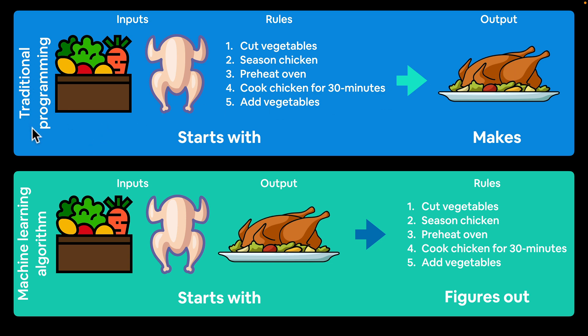Now, a machine learning algorithm typically takes some inputs and some desired outputs, and then figures out the rules. So the patterns between the inputs and the outputs.